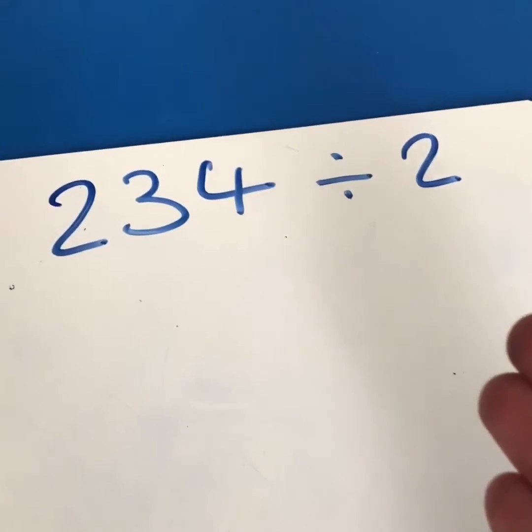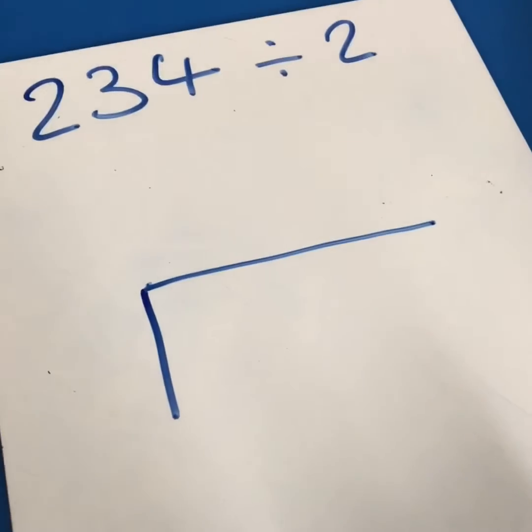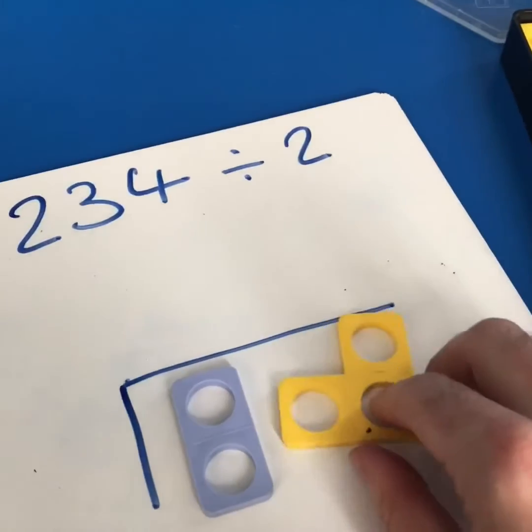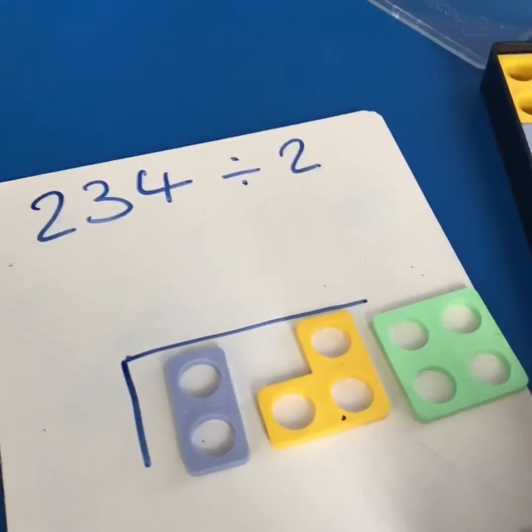You've got your problem. Lay out your bus stop and then get the Numicon that goes with each number: 234. Done.